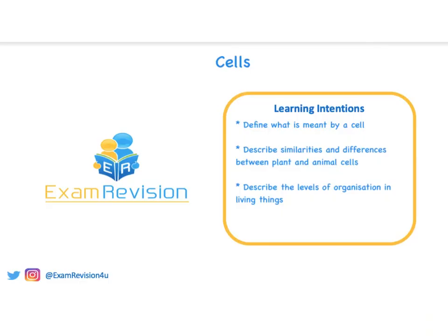To recap what we covered today: we defined what is meant by a cell, we described similarities and differences between plant and animal cells, and we described the levels of organisation in living things.